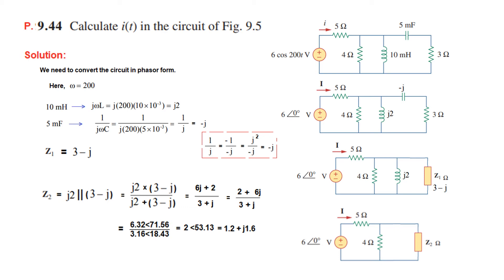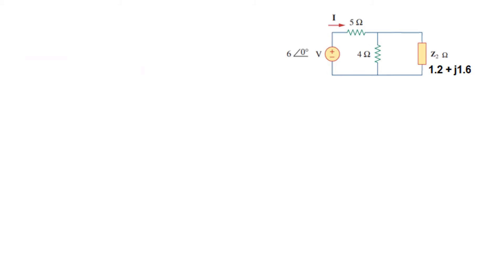Converting both values into polar form and then dividing, we get 2 at angle 53.13 degrees. Converting this into rectangular form gives us Z2.